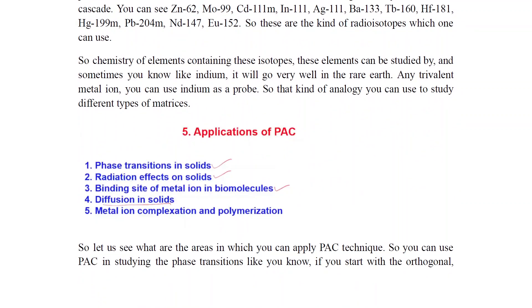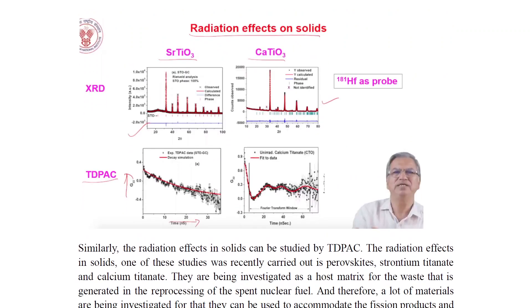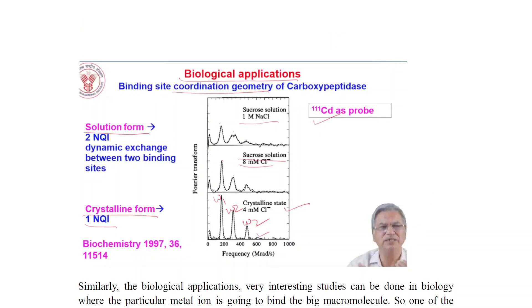Applications of PAC include: phase transitions in solids, radiation effects on solids, binding sites of metal ions in biomolecules, diffusion in solids, and metal-ion complexation and polymerization. For radiation effects, XRD of SrTiO3 and CaTiO3-type perovskite oxides is studied using 181Hf as a probe, and changes in the electric field gradient are observed over time.